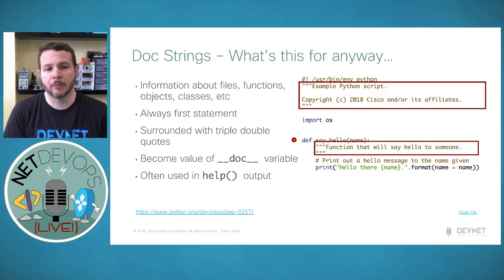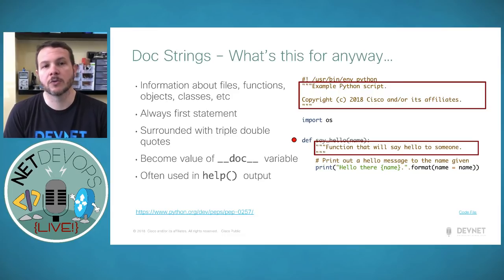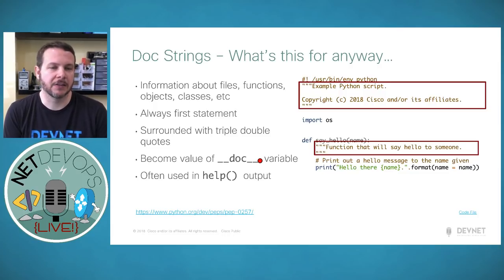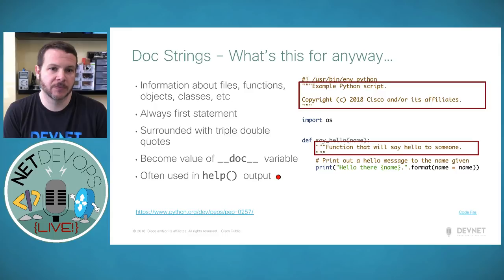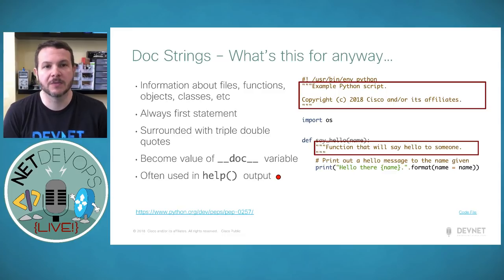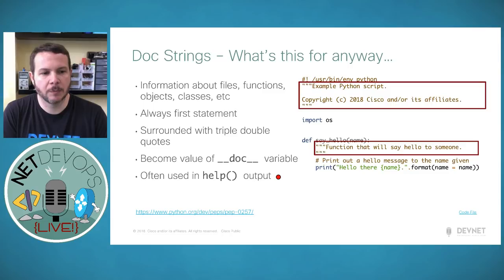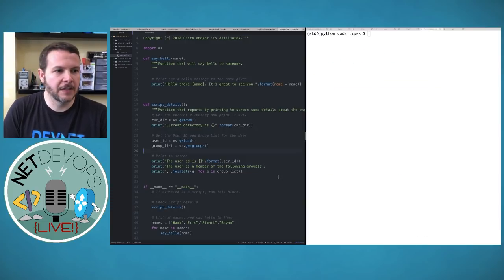Doc strings are leveraged in a couple of different places. There's a built-in variable called `__doc__` (often verbalized as 'dunder doc') in every Python module or execution, and the doc strings become the value of dunder doc automatically—so you can access it within your code. You can also find doc strings inside help output: if you run `help(say_hello)` on a function, you'll see the doc string come back as part of that output. Let's take a look at these pieces live in code.